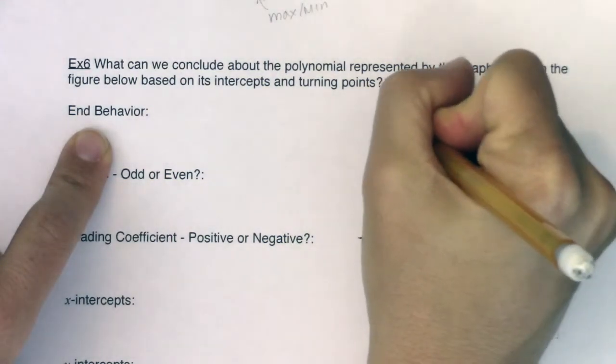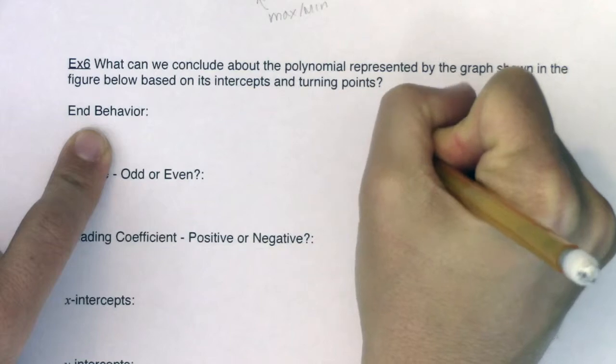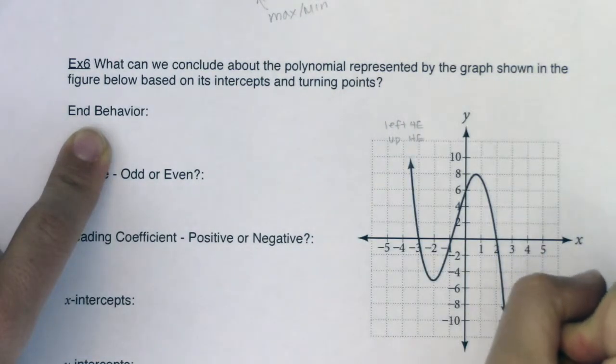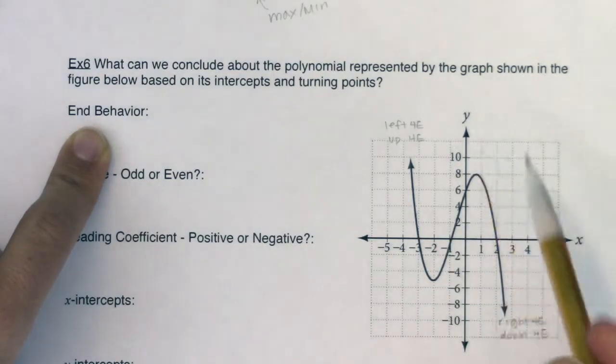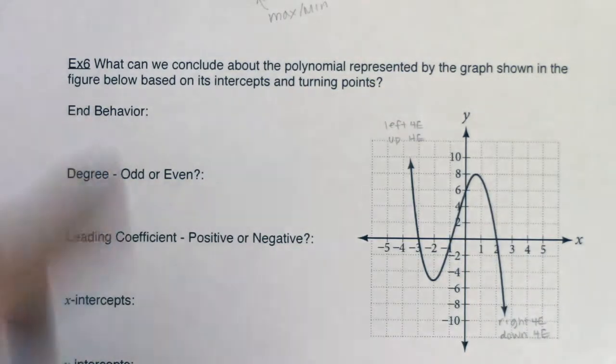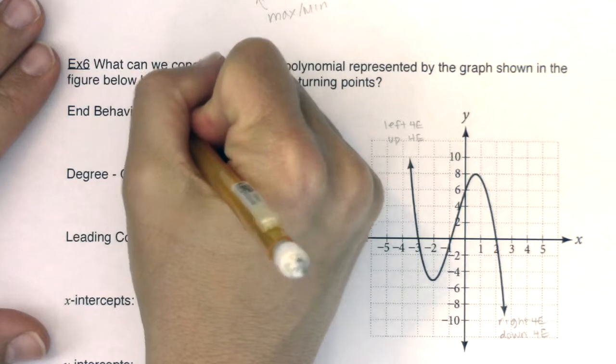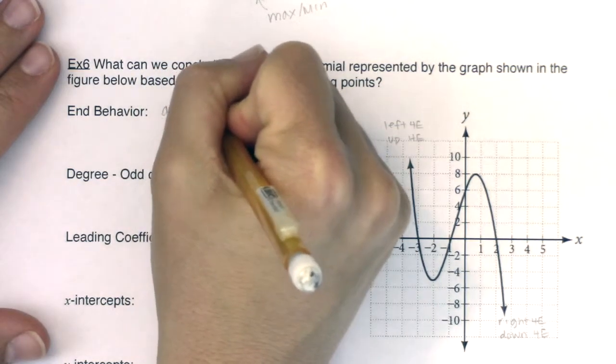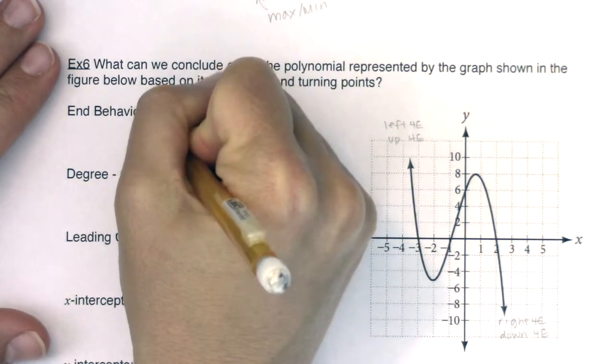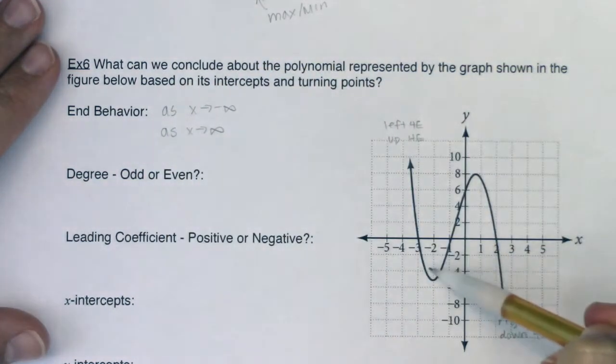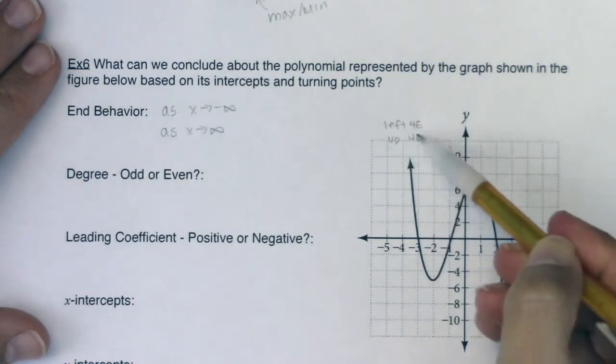We would have said this was left forever and up forever and this would have been right forever and down forever, meaning I can see that my domain and range are both negative infinity to infinity. But when we talk about end behavior, we always start with as x goes left and as x goes right. So let's see what's happening. As I head left, I can see that I'm heading up.